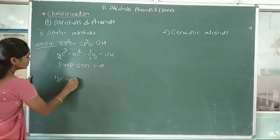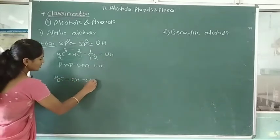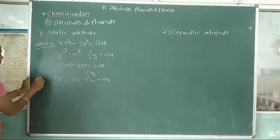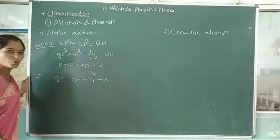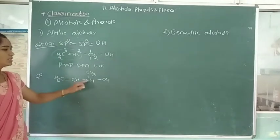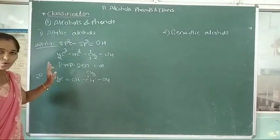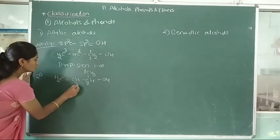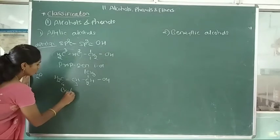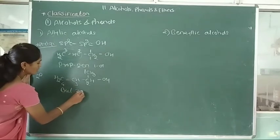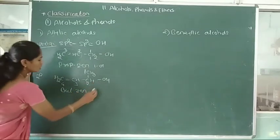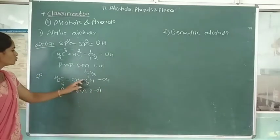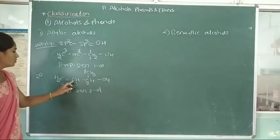Second, an example of secondary allylic alcohol: CH2=CH–CHOH–CH3. Name of this compound: but-3-en-2-ol.